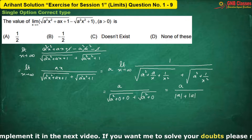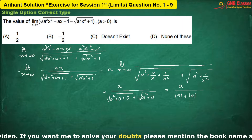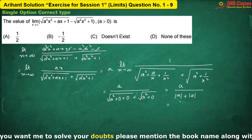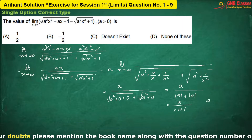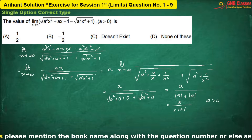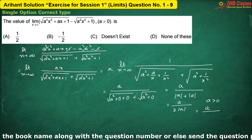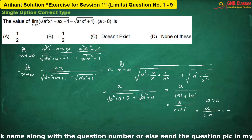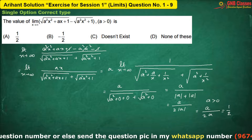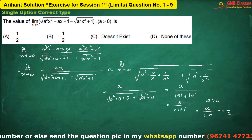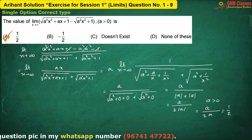We know that anything which comes out of a root sign is always with a mod sign. In the question, they have said that a is greater than 0, so we can remove the mod. The answer will be half. Hence, option A is correct. Let us move for the next problem.